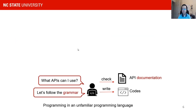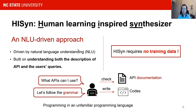How do I program? When programming in an unfamiliar domain, if I need to check what APIs I could use, I check the API documentation, then follow the grammar and write the corresponding code. The most important thing is that I can understand the API descriptions inside the documentation and compare them with the function I need. Can we bring this method to a program synthesizer? The answer is yes. Inspired by this idea, we propose HySing, a human learning-inspired synthesizer driven by natural language understanding.